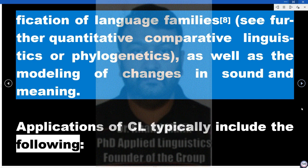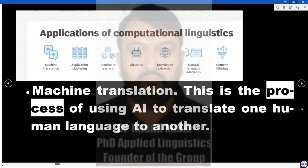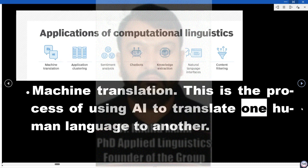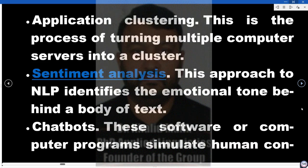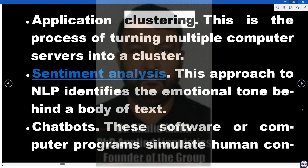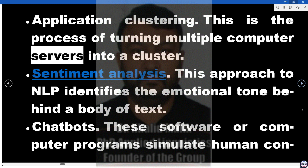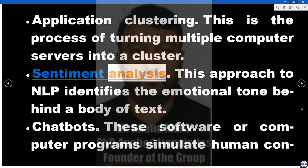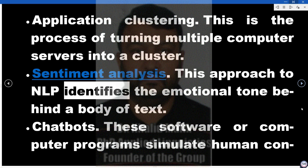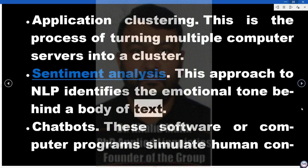Applications of CL typically include the following. Machine Translation: the process of using AI to translate one human language to another. Application Clustering: the process of turning multiple computer servers into a cluster. Sentiment Analysis: this approach to NLP identifies the emotional tone behind a body of text.